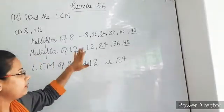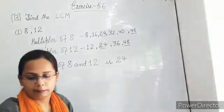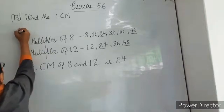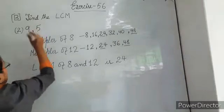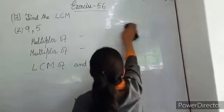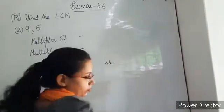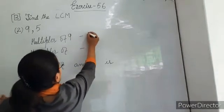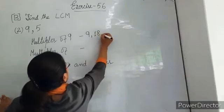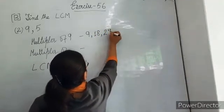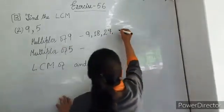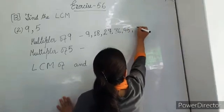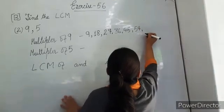Again I am doing another example, so that if there is any doubt, it could be cleared with another example. So let's see: 9 and 5. Now write the multiples of 9 and multiples of 5. Multiples of 9: 9, 18, 27.